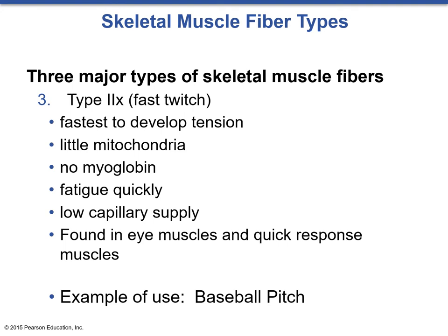The final type is Type 2X, fast twitch glycolytic. It is way faster than Type 2A and has the fastest developed tension. It has little mitochondria and no myoglobin, fatigues very quickly, and has a low capillary supply. It's typically found in eye muscles and other quick response muscles. An example of this would be a baseball pitch—very aggressive, powerful production, but not taking very long for the activity to take place.